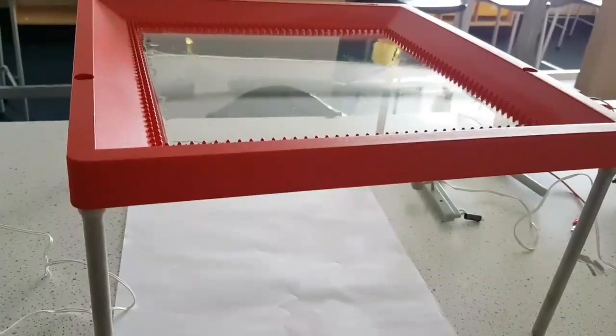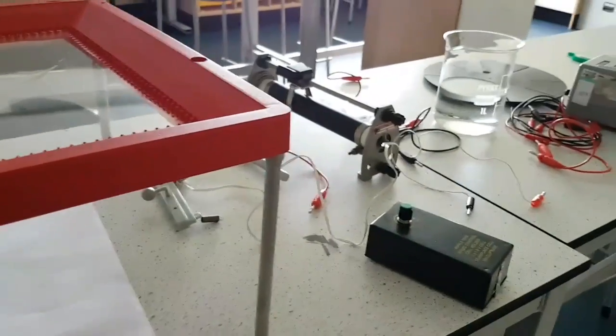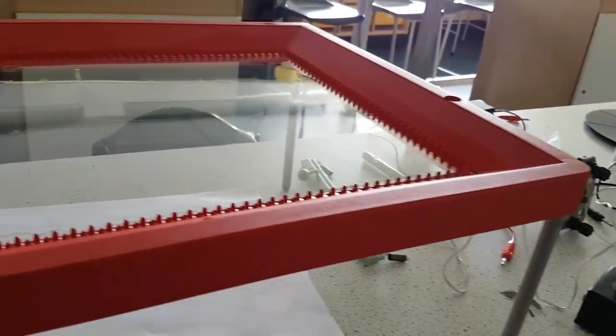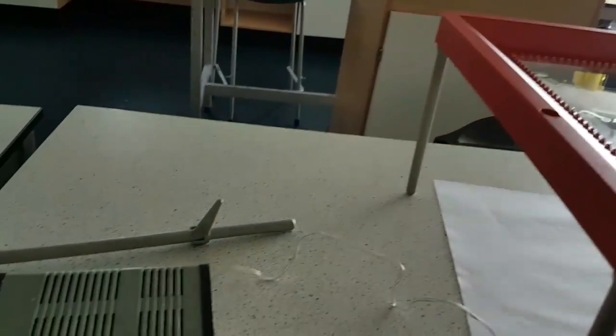Okay, so here is the ripple tank experiment. We're going to be creating waves in the water. Waves in the water are transverse waves, which means that they move 90 degrees in the direction of motion.